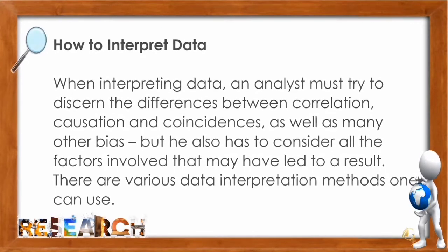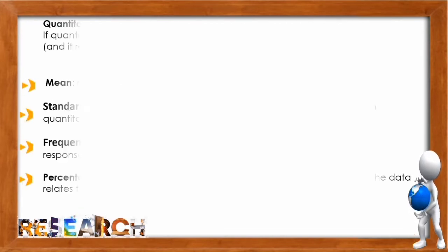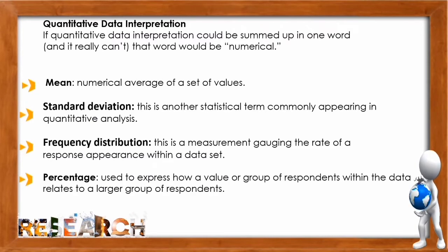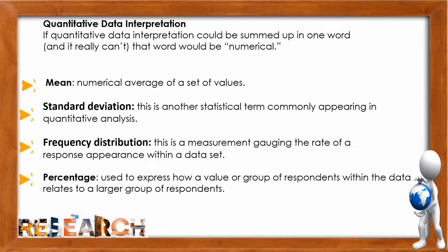Let's also know how to interpret data. When interpreting data, an analyst must try to discern the difference between correlation, causation, and coincidence, as well as many other biases, but also consider all the factors involved that may have led to a result. We also have quantitative data interpretation, which could be summed up in one word: numerical. For mean: it's a numerical average of a set of values. Standard deviation is another statistical term commonly appearing in quantitative analysis. Frequency distribution is a measurement gauging the rate of a response appearance within a data set. And for percentage: it is used to express how a value or group of respondents within the data relates to a larger group of respondents.